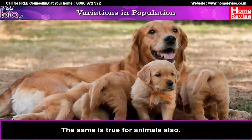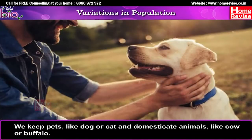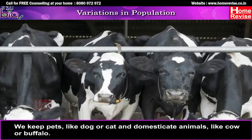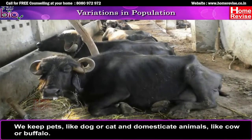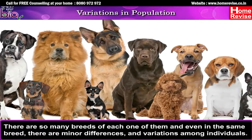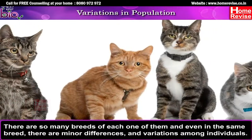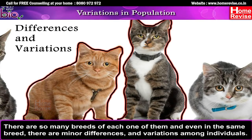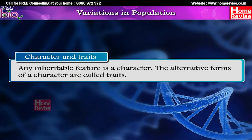These small differences among individuals are called variations. The same is true for animals: we keep pets like dogs or cats and domesticate animals like cows or buffaloes. There are so many breeds of each, and even within the same breed there are minor differences and variations among individuals. Any inheritable feature is called a character, and the alternative forms of a character are called traits.